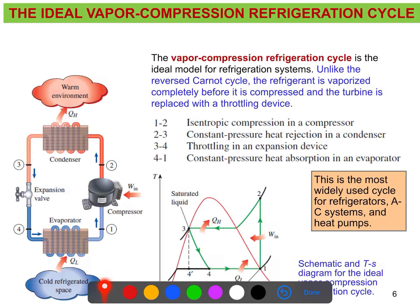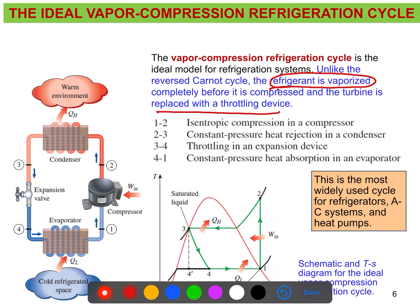The reverse Carnot cycle has some impracticalities, and we can eliminate those by two modifications: first, we completely vaporize the refrigerant — the working fluid — before it enters the compressor; and second, we replace the turbine with a throttling device, such as an expansion valve or capillary tube.